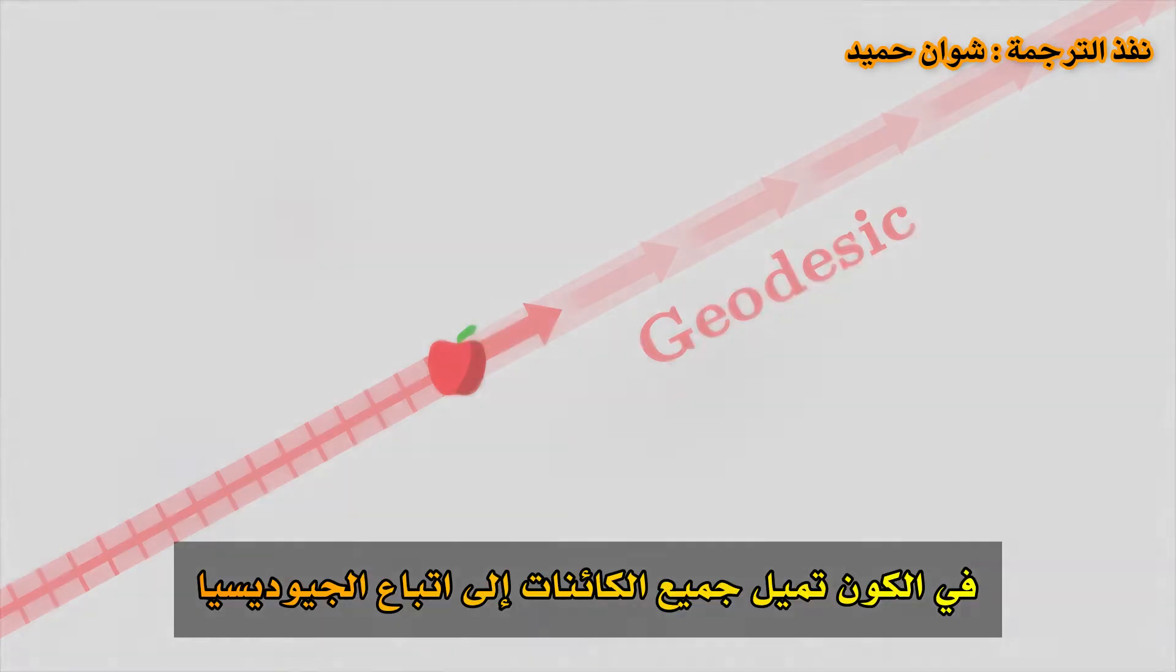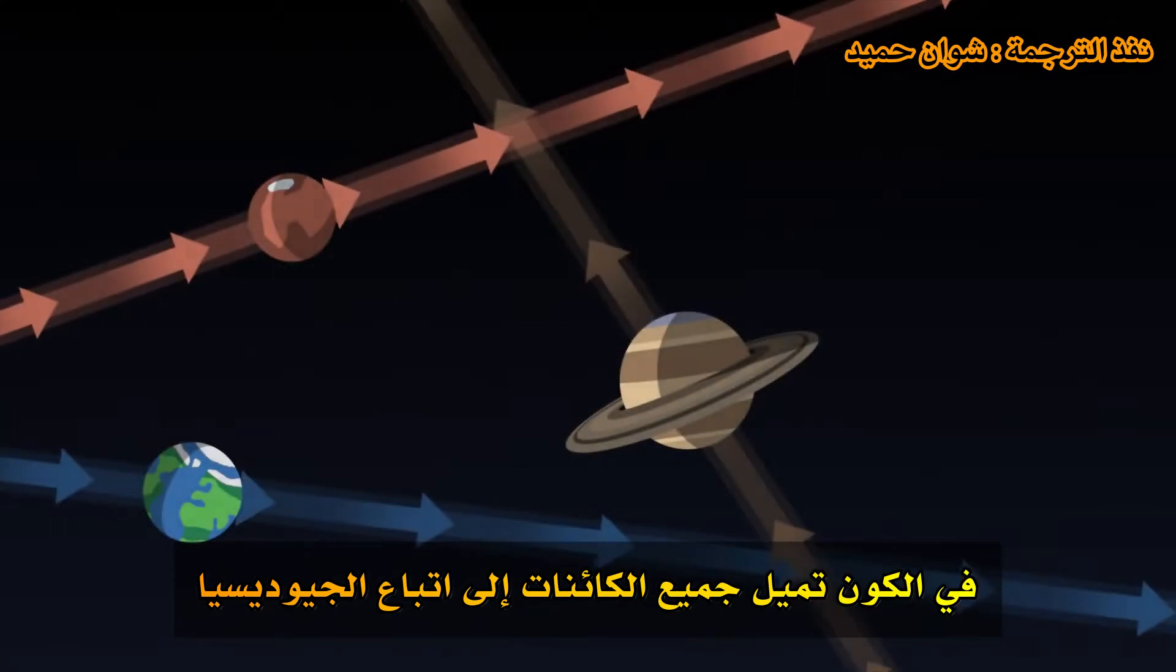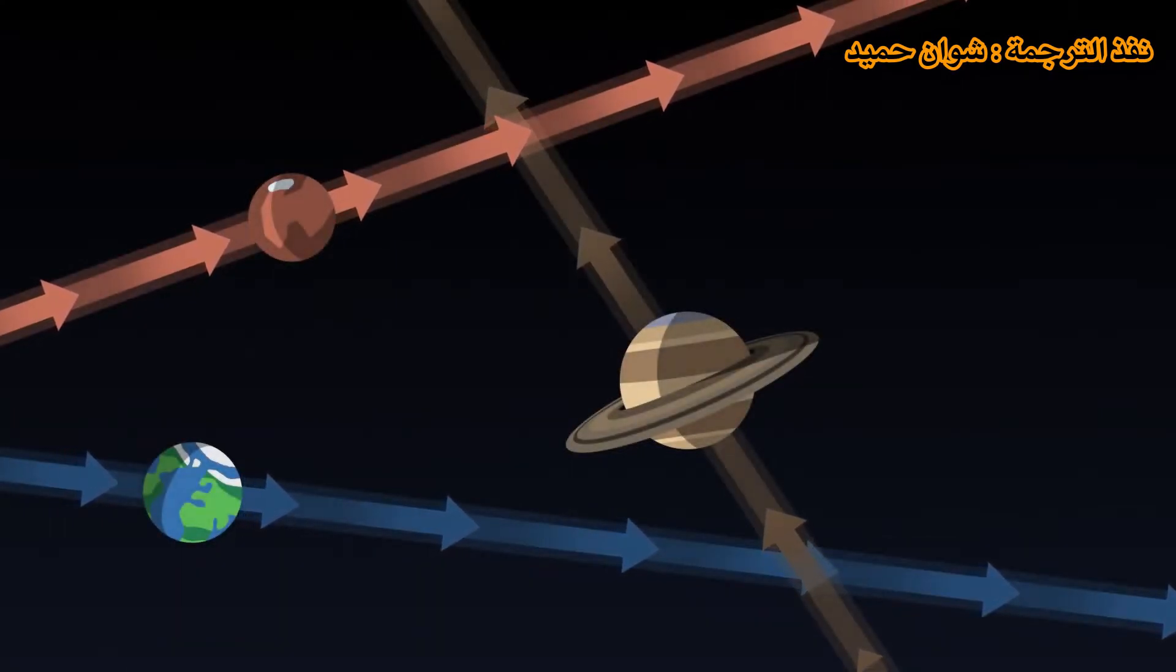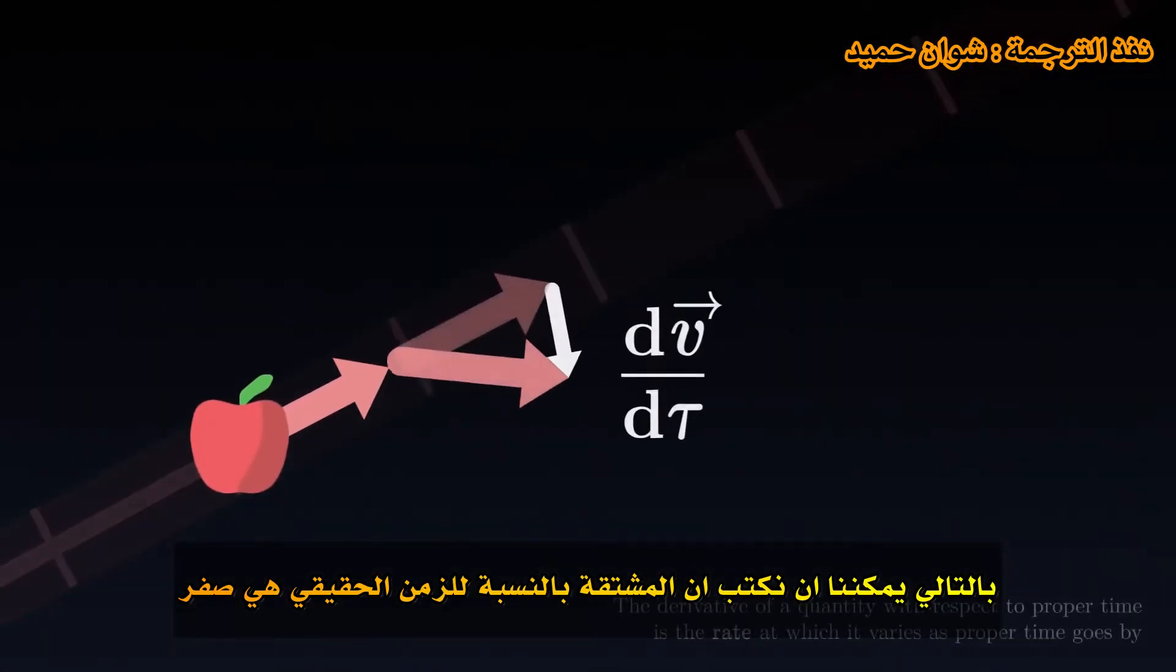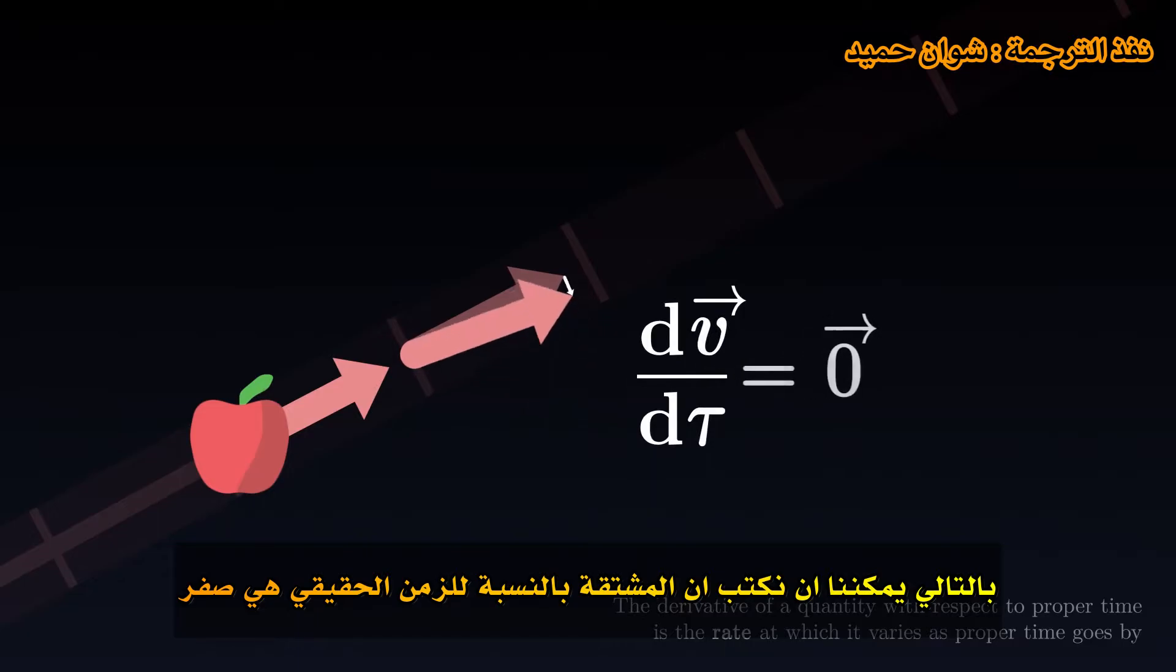In the universe, all objects tend to follow geodesics. On a geodesic, the vector does not turn. We can thus write that its derivative with respect to proper time is zero.